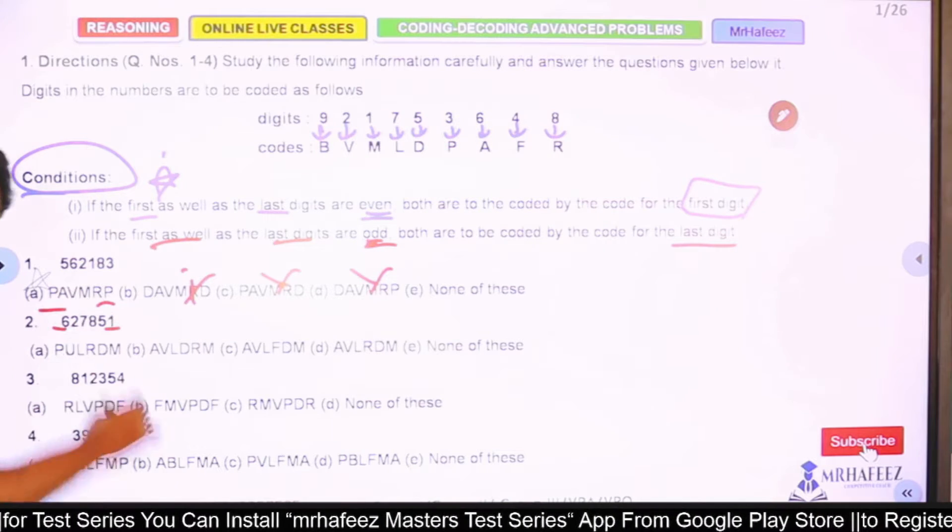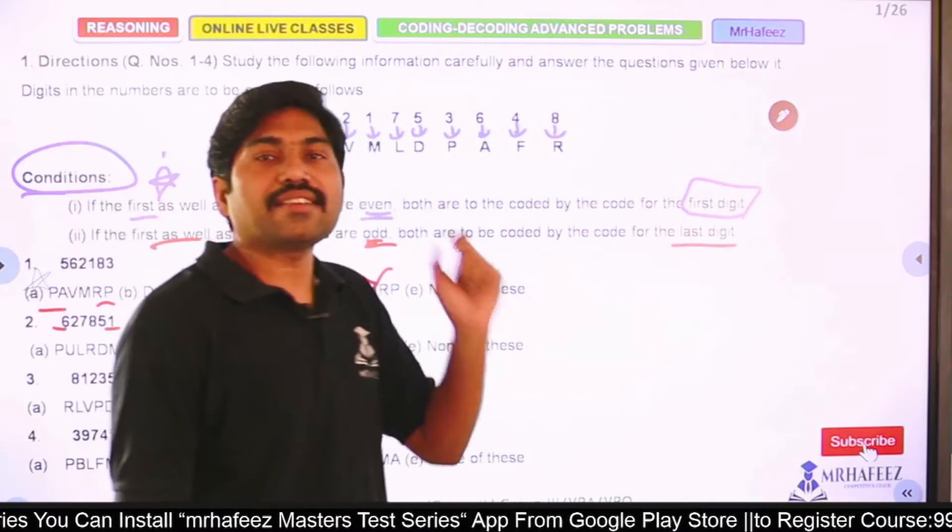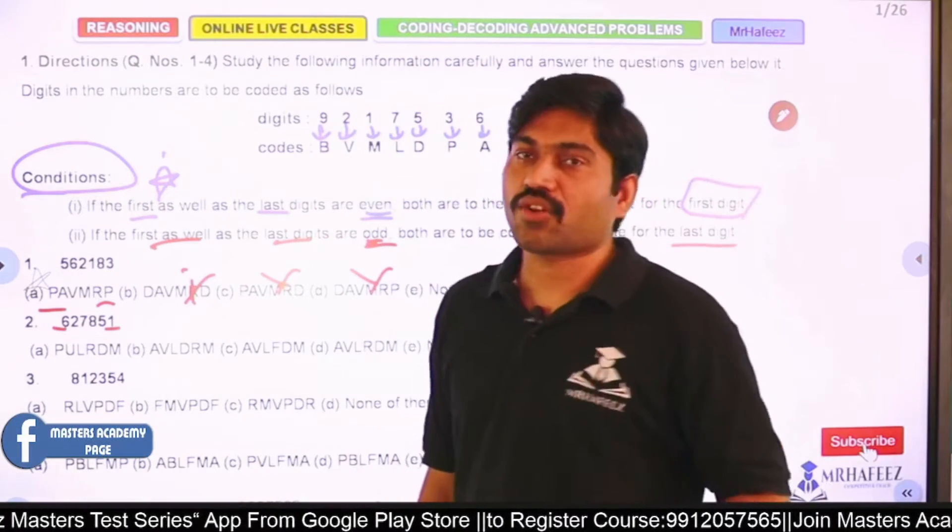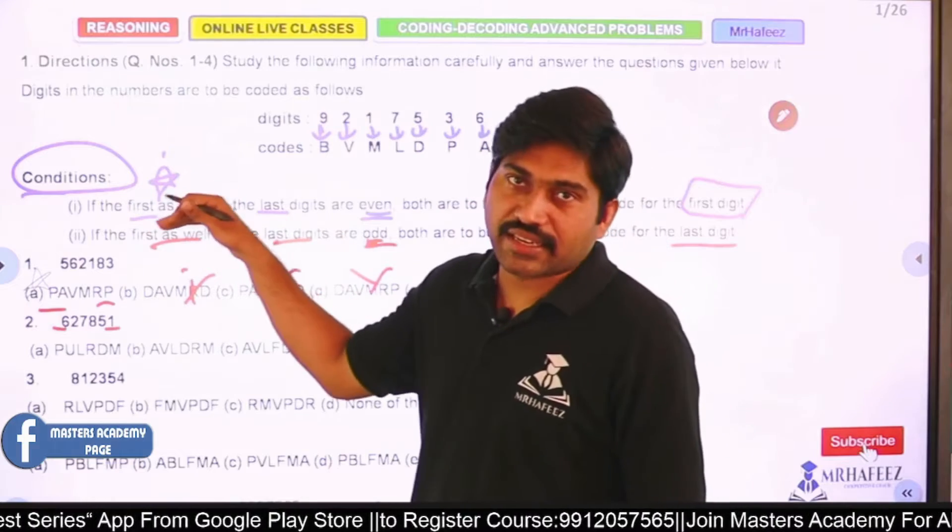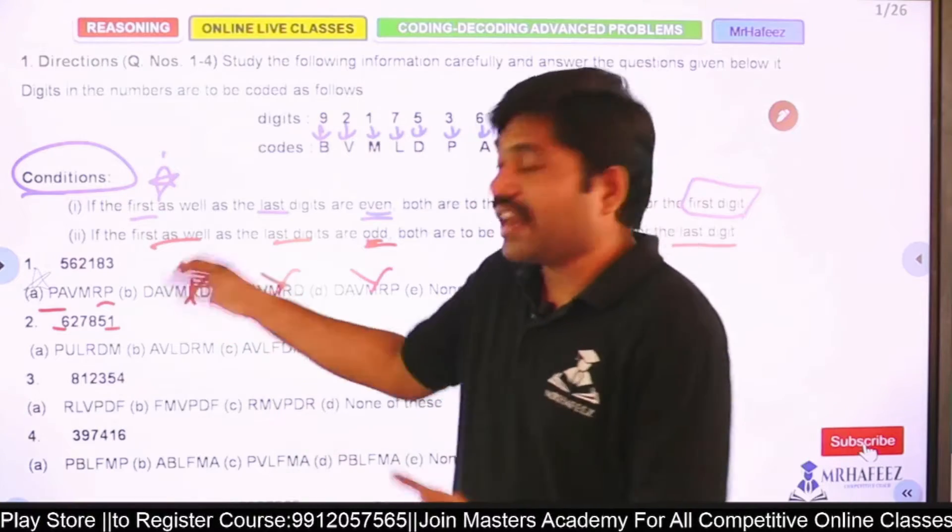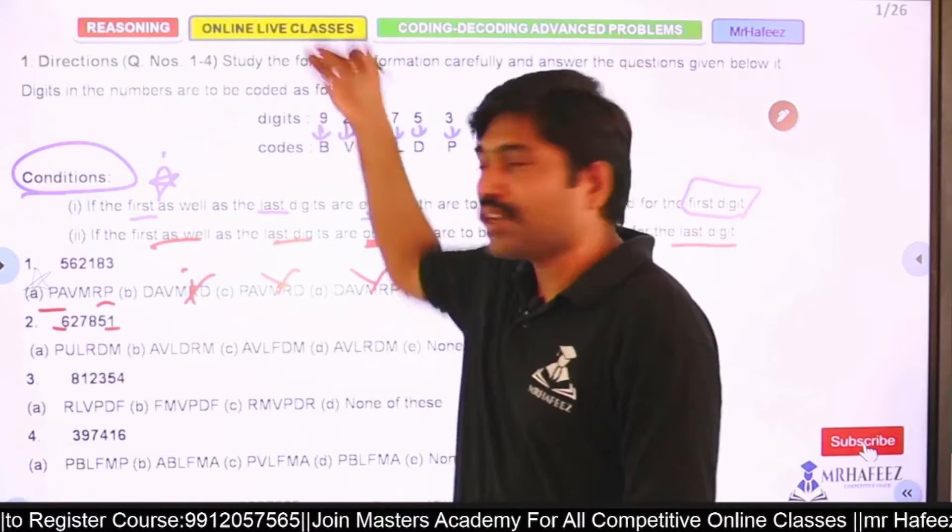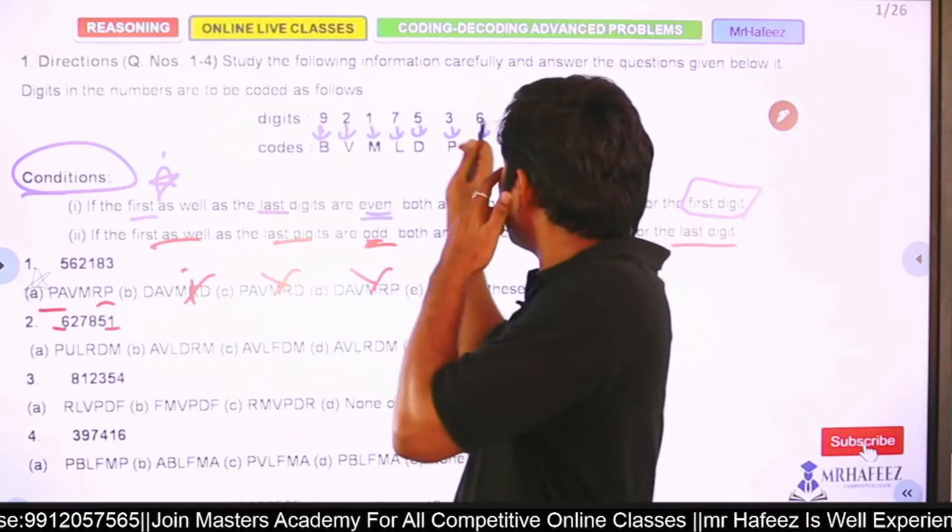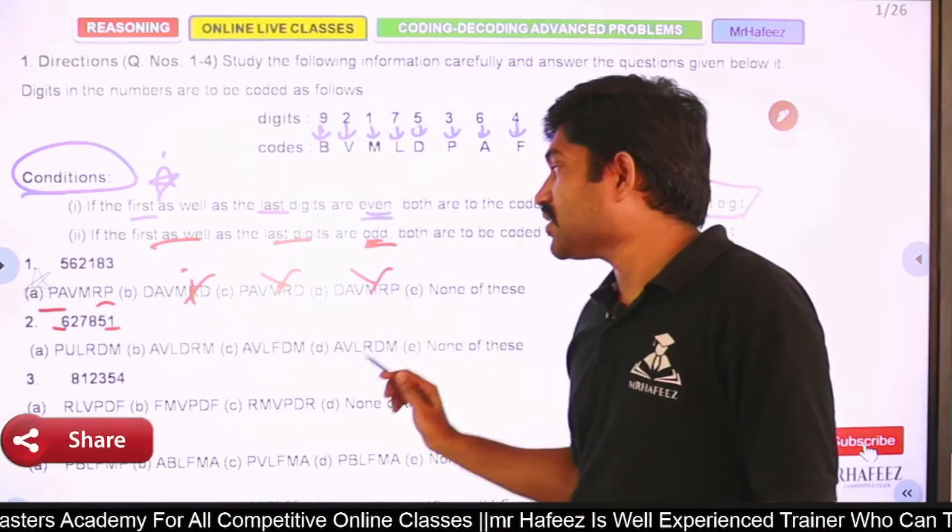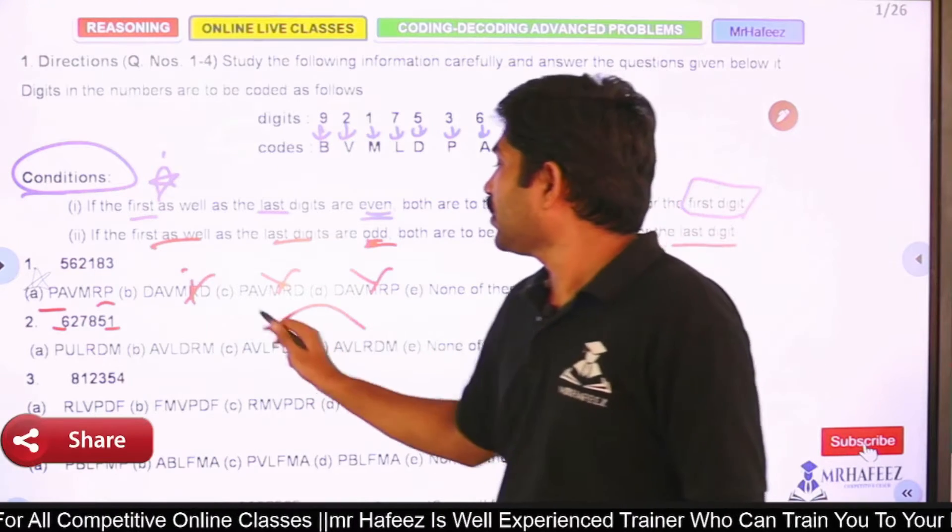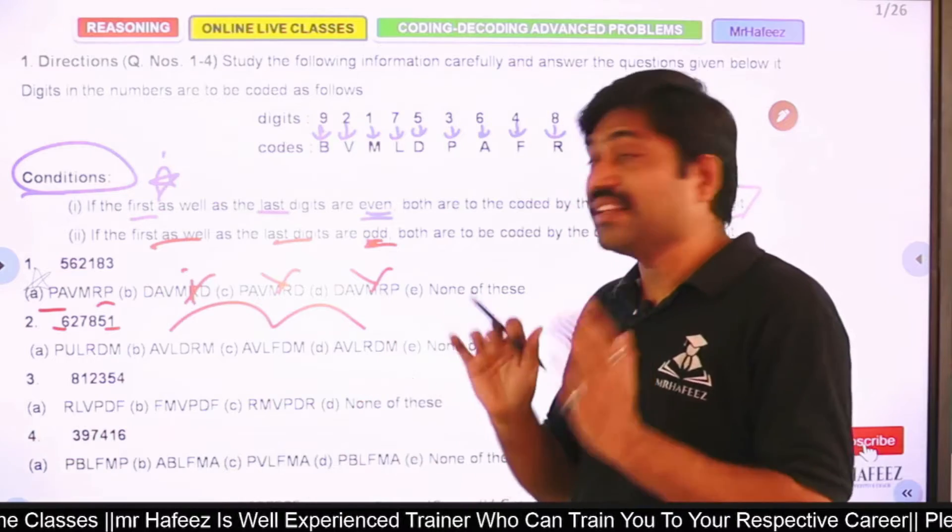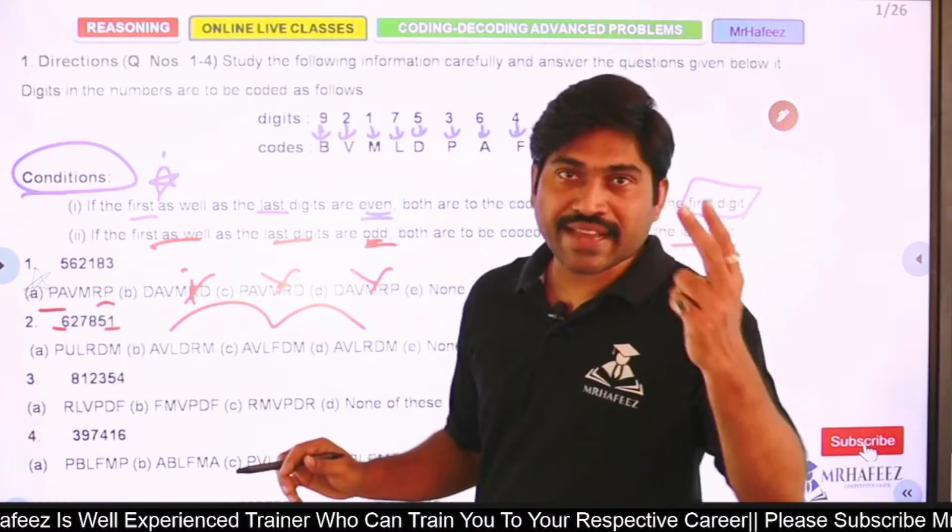6 and 1. First digit is 6, last digit is 1. One is even, the other is odd. There is no such type of condition here. Both even has a condition, both odd has a condition, but this type doesn't. So no changes - direct implementation. Check the options.